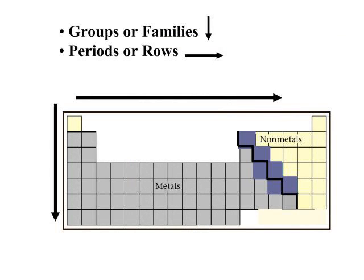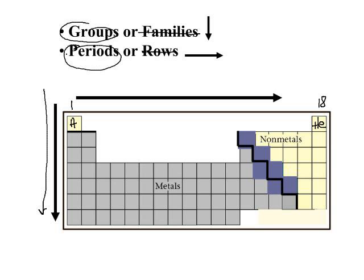When you're looking at the periodic table, the group numbers are 1 through 18 — that's going down the periodic table — and then your periods go across. The first period is the smallest, containing only hydrogen and helium. The words families and rows are often used, but we're going to stick with groups and periods.